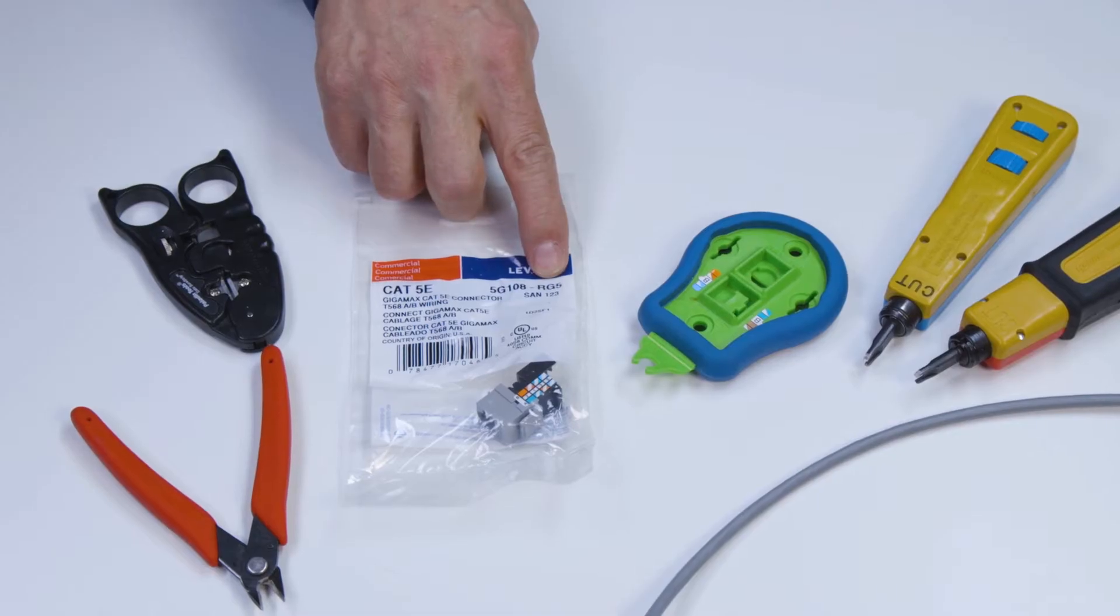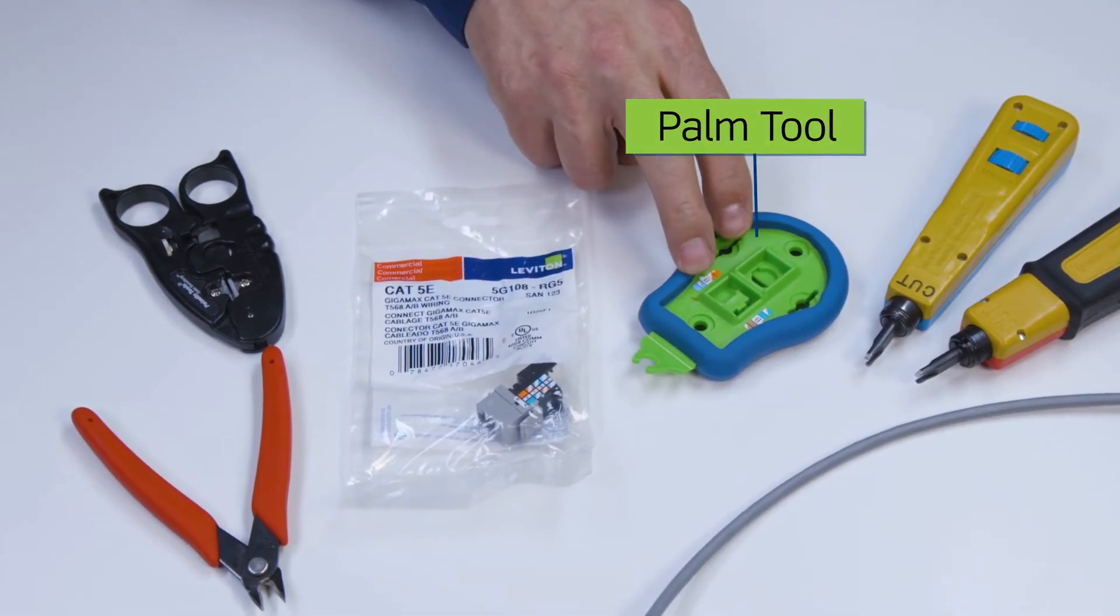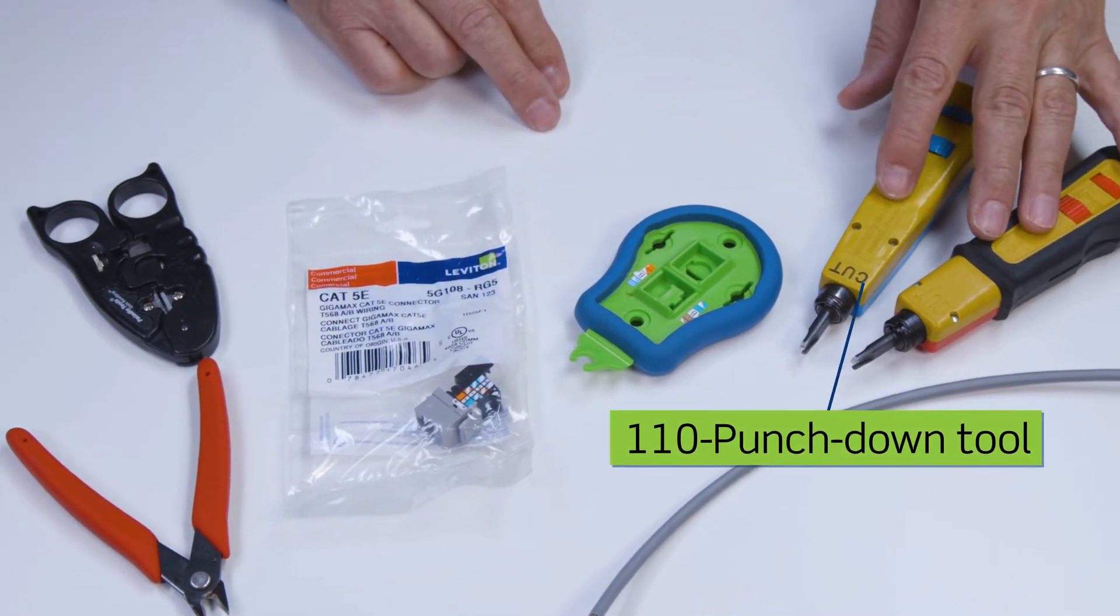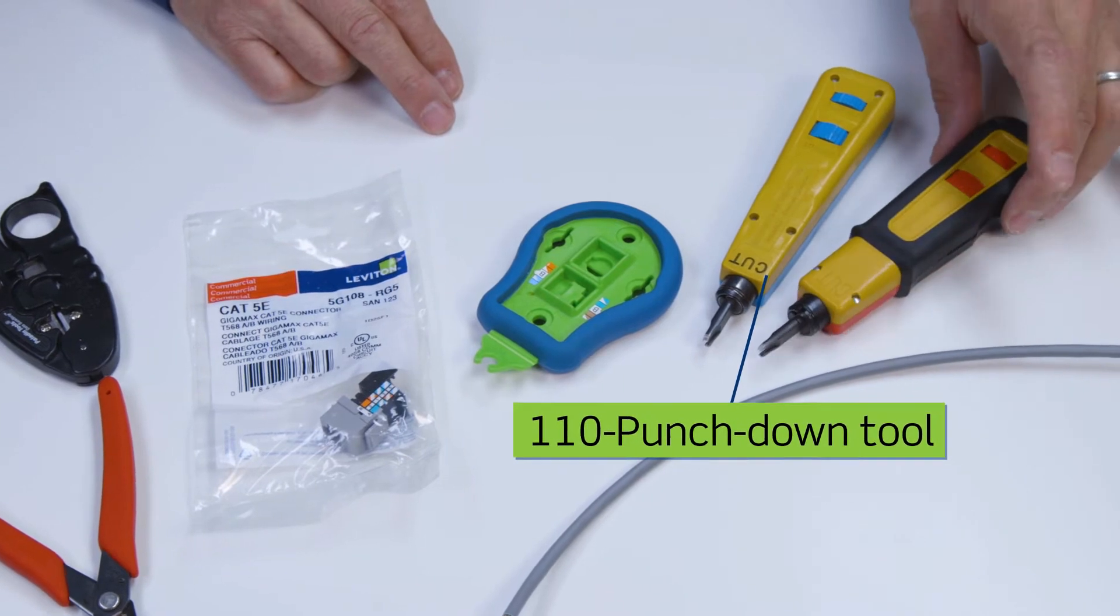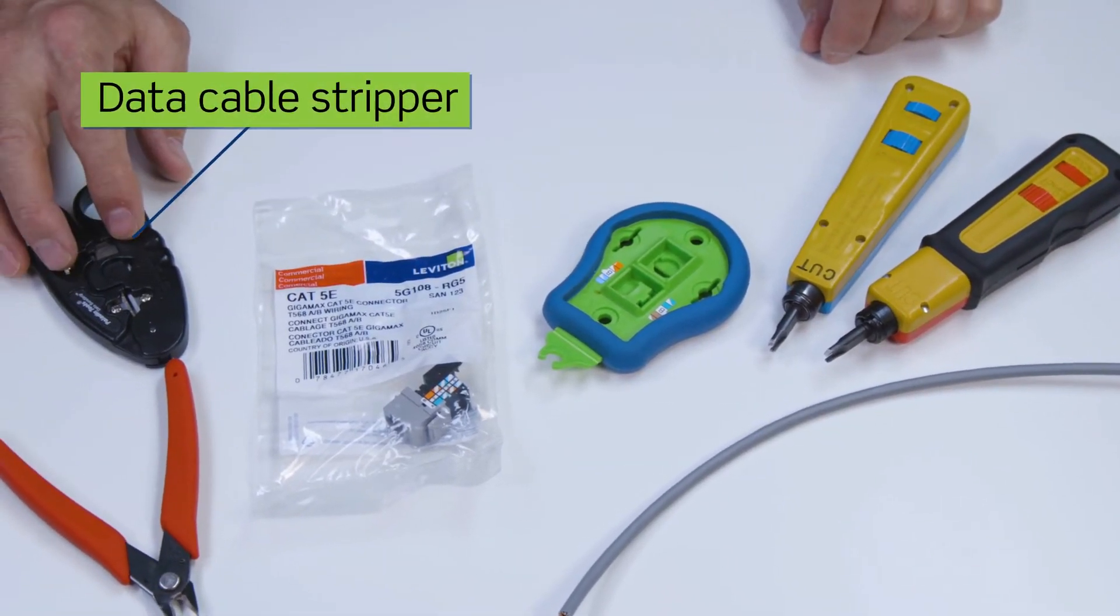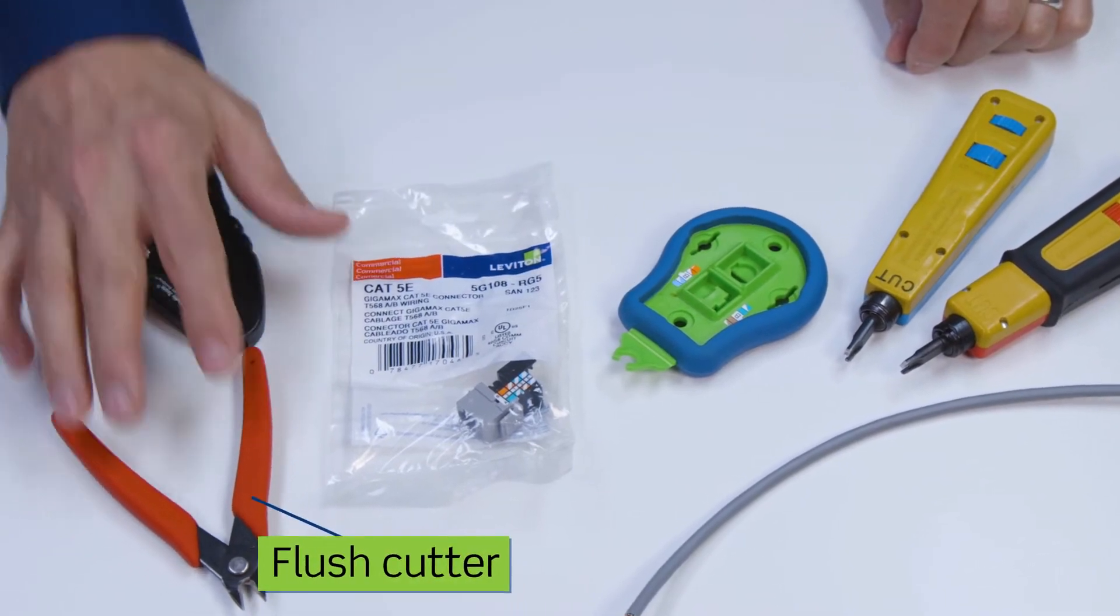For the Gigamax jack, we'll use the following tools: Leviton palm termination tool, a 110 punchdown tool, data cable stripper, and a flush cutter.